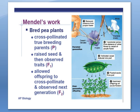Mendel bred pea plants in the monastery garden, crossing different types of traits and observing the offspring. He took pollen from the male parts of one flower and transferred it to the female parts of another flower — basically doing with a paintbrush what bees do in nature, transferring male sex cells from one flower to the female parts of another. That's how plants spread their gametes.